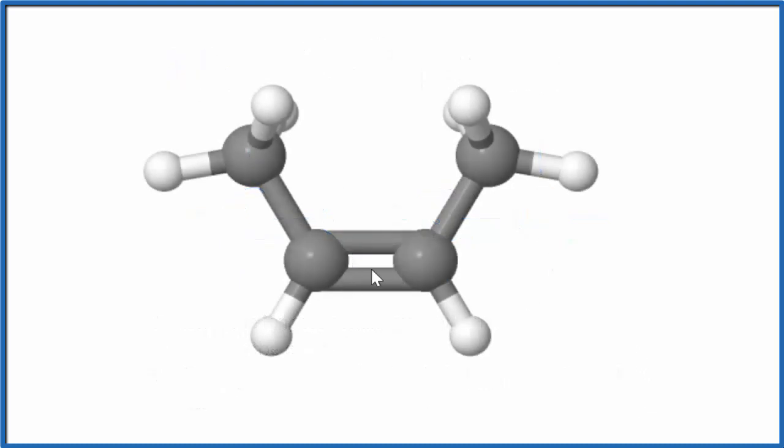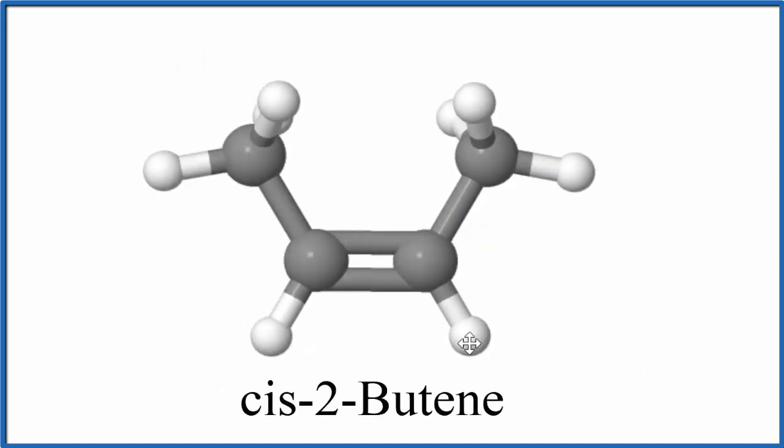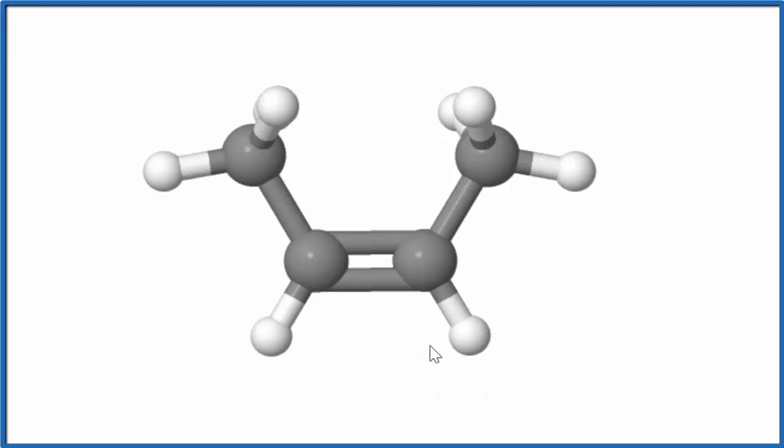So this is the cis isomer. You can see these hydrogens down here, they're both on the same side. Same for these methyl groups up here. So the cis isomer has these constituents on the same side.